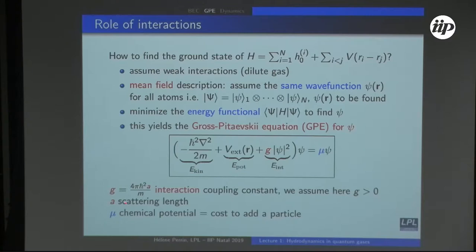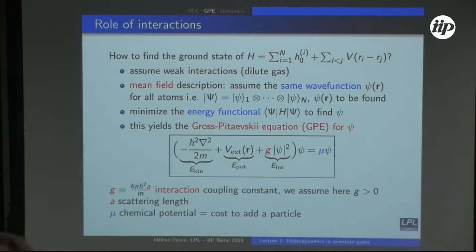For the rest of this course I will consider only positive (repulsive) interactions. In 3D, attractive interactions lead to unstable BECs that collapse beyond roughly 100 particles. However, for bright solitons in 1D you need negative g. The small parameter controlling the validity of this mean-field theory is the density times the cube of the scattering length (na³). This is 10⁻² to 10⁻³ in cold atom experiments, so quantum depletion is very small — unlike helium, where the condensate fraction is below 10% due to very strong interactions.